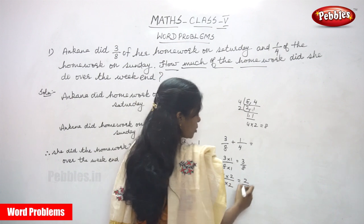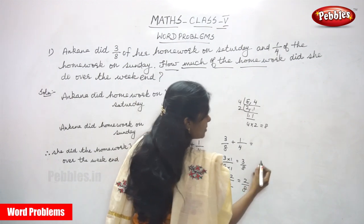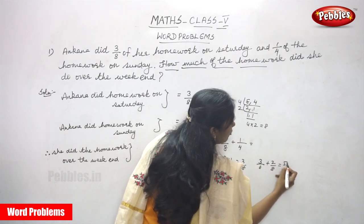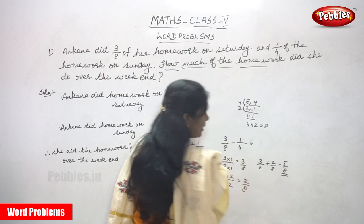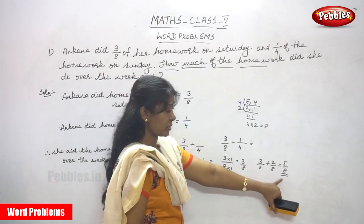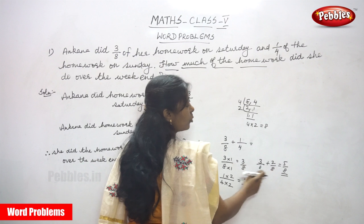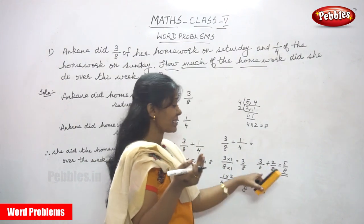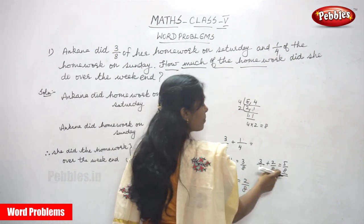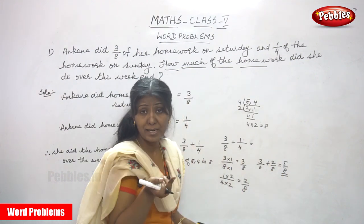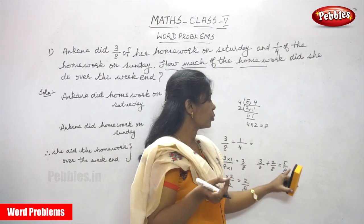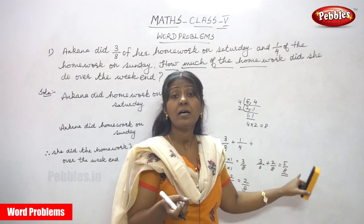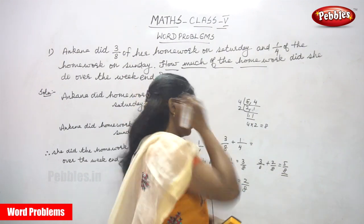Now the denominators are the same. So three-eighths plus two-eighths equals five-eighths. The answer is five-eighths — a proper fraction, where 5 is the numerator and 8 is the denominator.